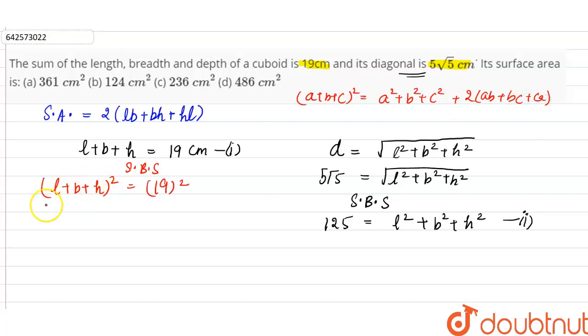So here we can apply this identity. So it will be equal to L square plus B square plus H square plus 2 L into B plus B into H plus H into L, which is equal to 19 square. So 19 square is 361. Now here instead of L square plus B square plus H square we can write 125.